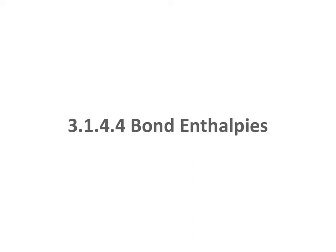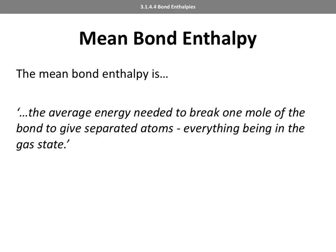At GCSE you referred to them as bond energies; we're now referring to them as bond enthalpies — that's what we call them at A level. You are typically given information in terms of mean bond enthalpies, so we just have to understand what exactly is meant by mean bond enthalpies. The mean bond enthalpy is the average energy needed to break one mole of a bond to give separated atoms, everything being in their gas state.